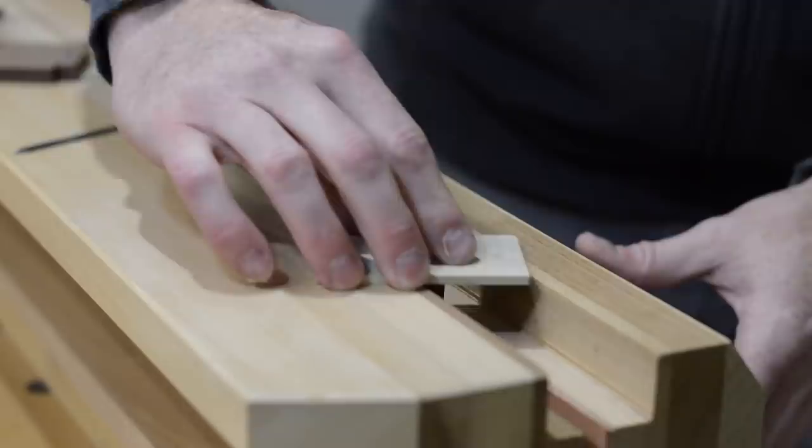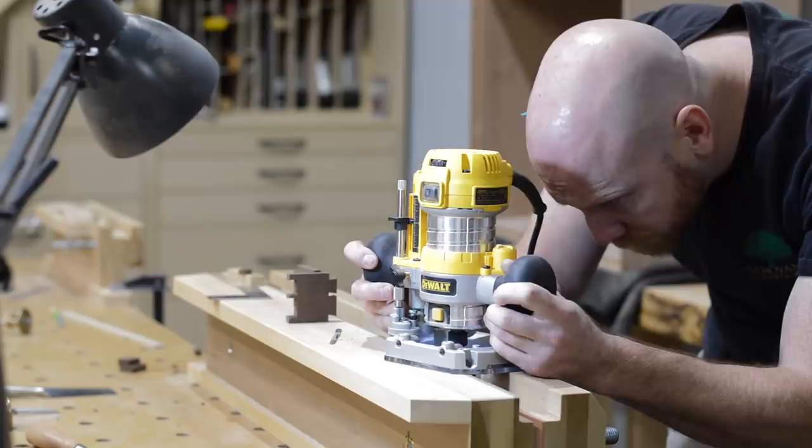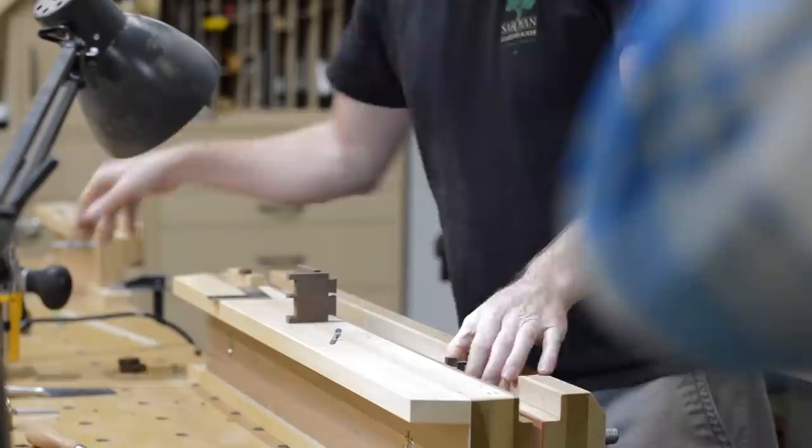This is my process for cleaning the waste out between pins. I first start by roughing most of the waste out with a fret saw. And then I like to come back with a bearing guided flush trim bit to clean out the rest of the waste.